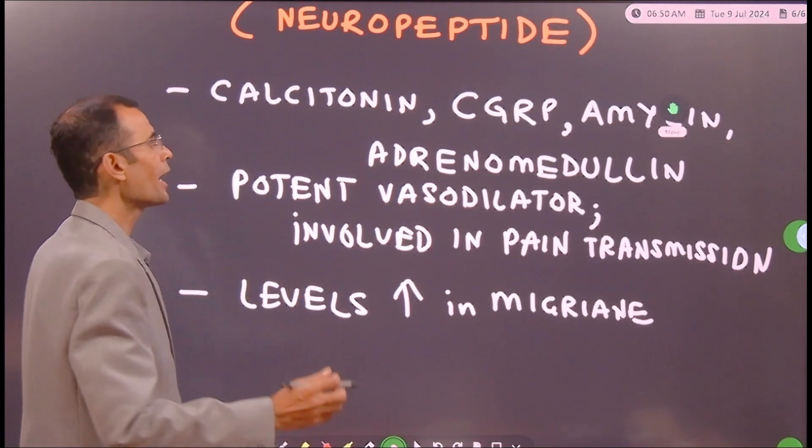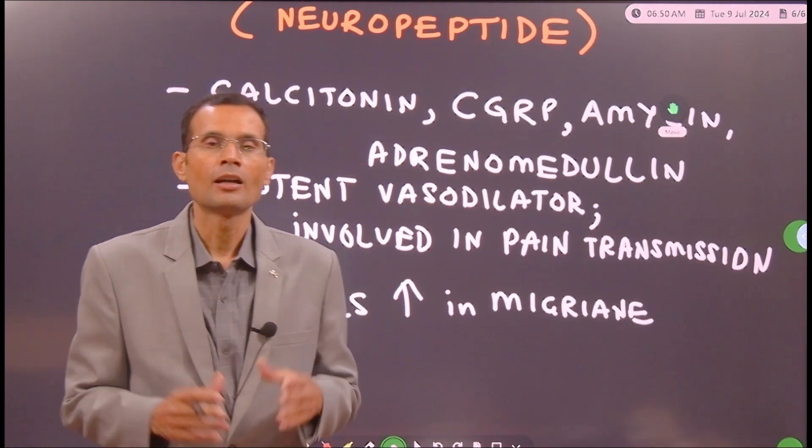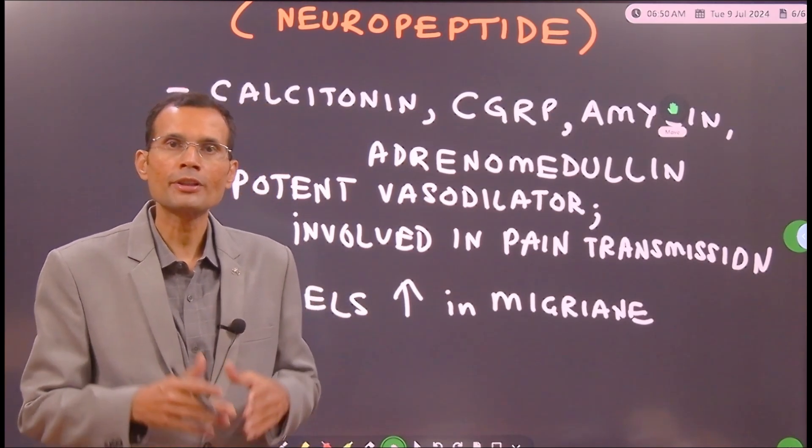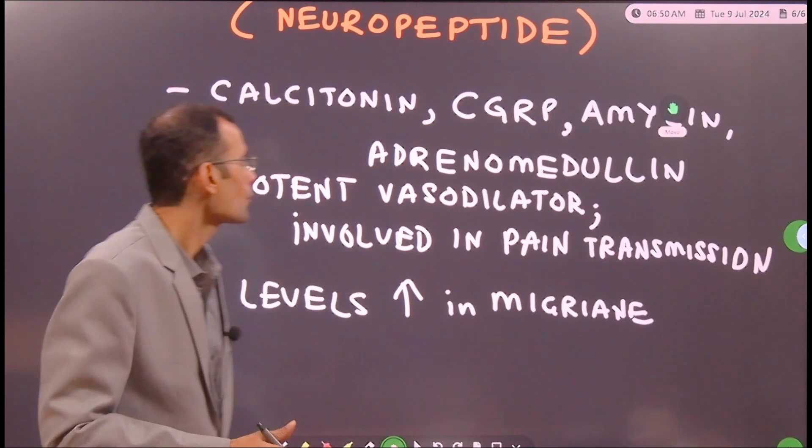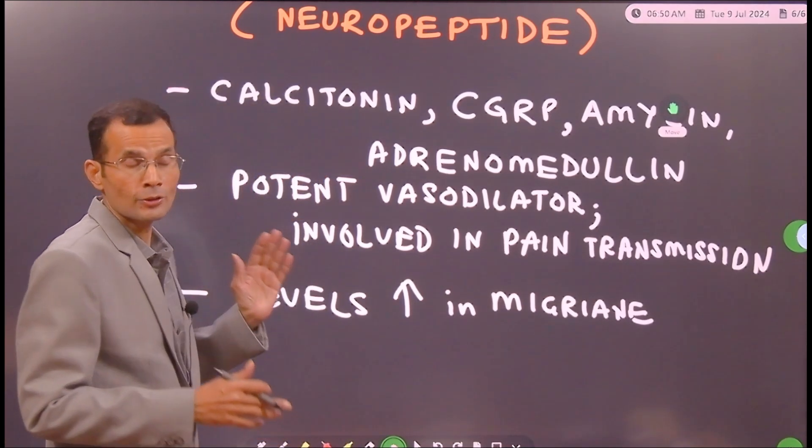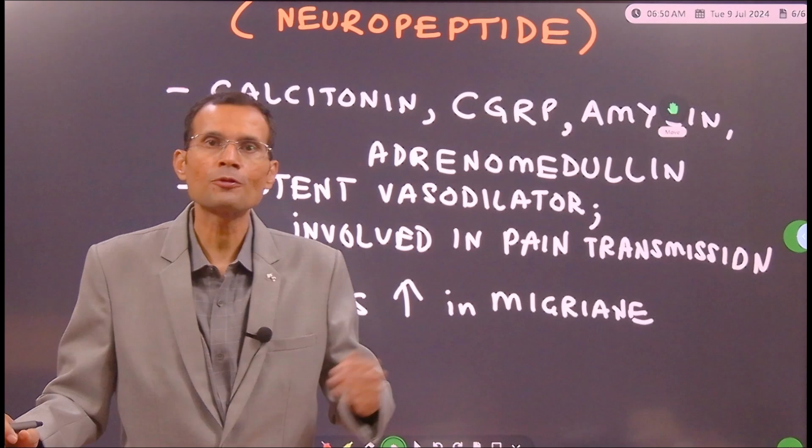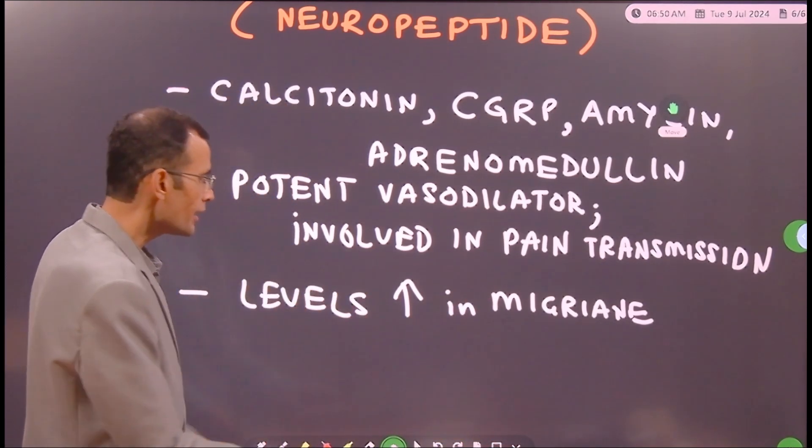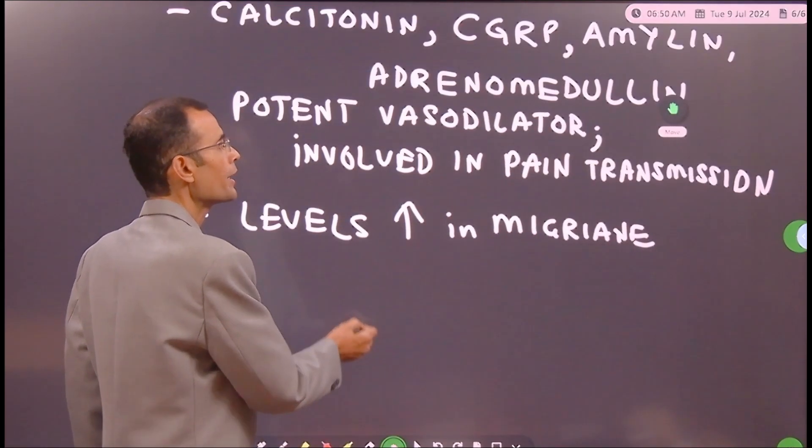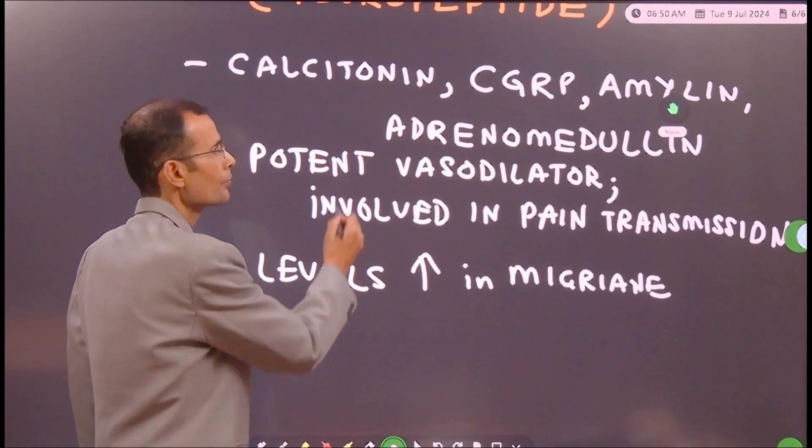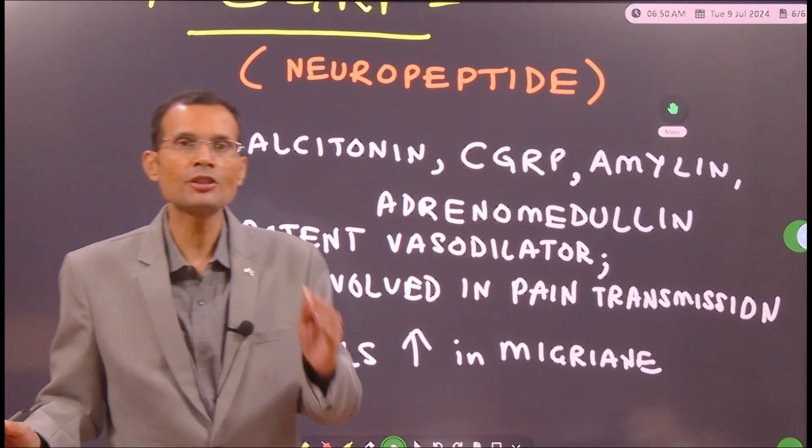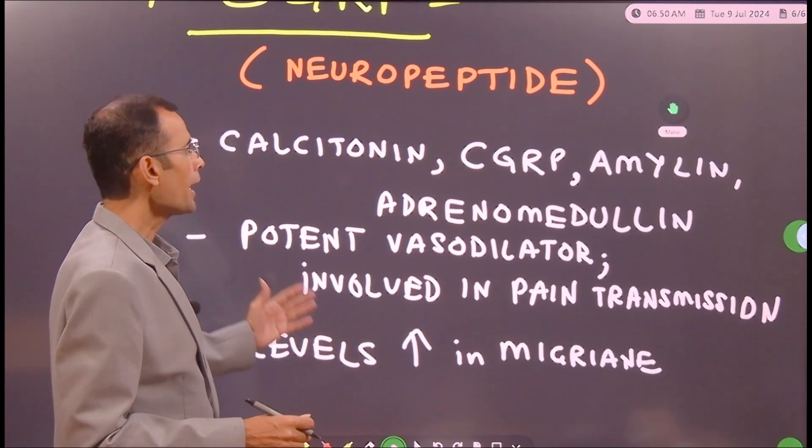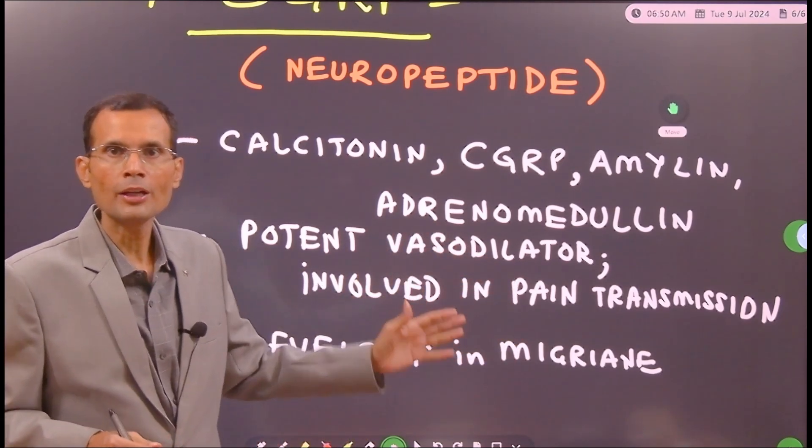CGRP is a potent vasodilator - yes, very important and potent vasodilator, almost as potent as nitric oxide. It is also possibly involved in the transmission of pain and its levels have been found to increase in conditions of migraine. So this is what is known about CGRP, calcitonin gene related peptide. It is a neurotransmitter and neuromodulator and the roles that we already are aware of.